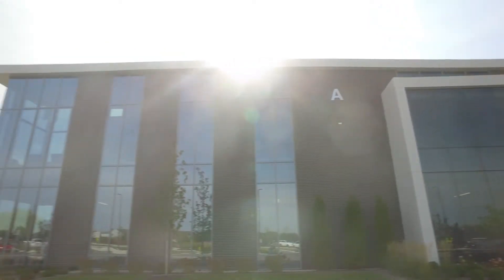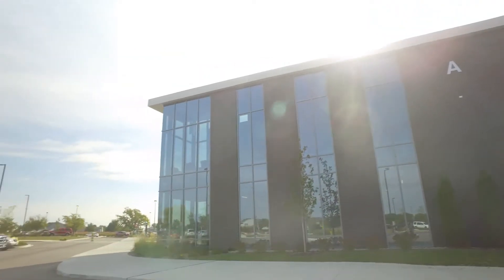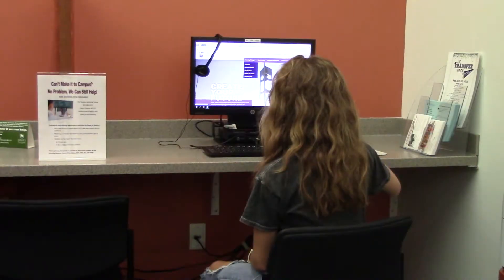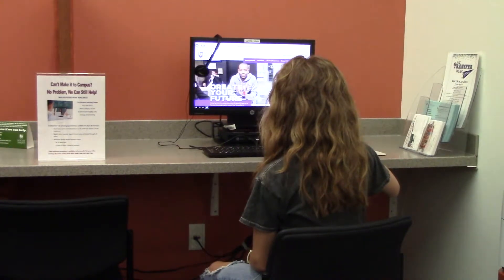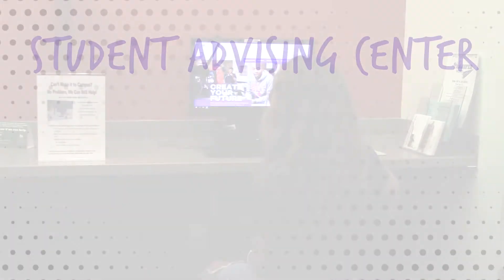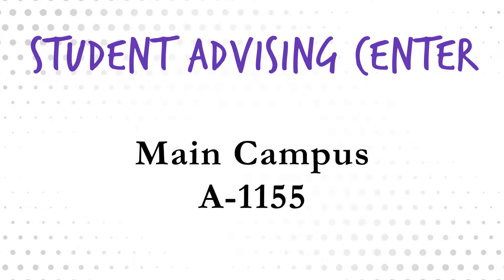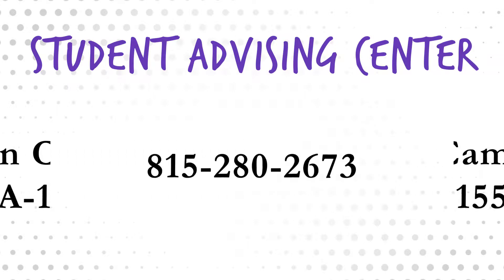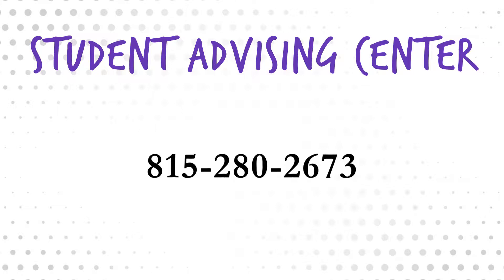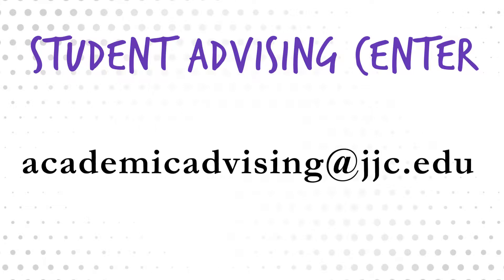Please note, web advising appointments can only be scheduled through a student's JJC email, so a MyJJC login is required. Students can schedule their appointments by visiting the Student Advising Center at Main Campus in person in room A-1155, or by calling 815-280-2673 or emailing academicadvising@jjc.edu.